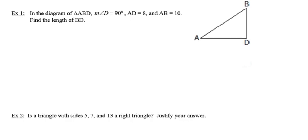In exercise one, it says in the diagram of triangle ABD, the measure of angle D is equal to 90 degrees, the length of segment AD is 8, and the length of side AB is 10. Find the length of BD.